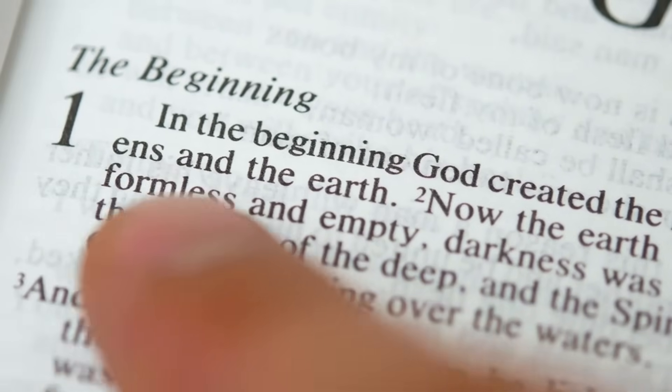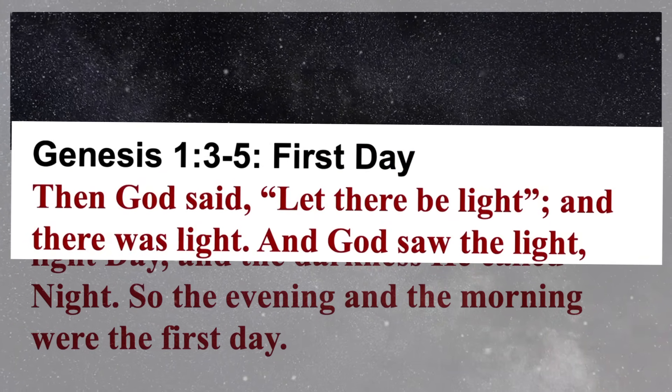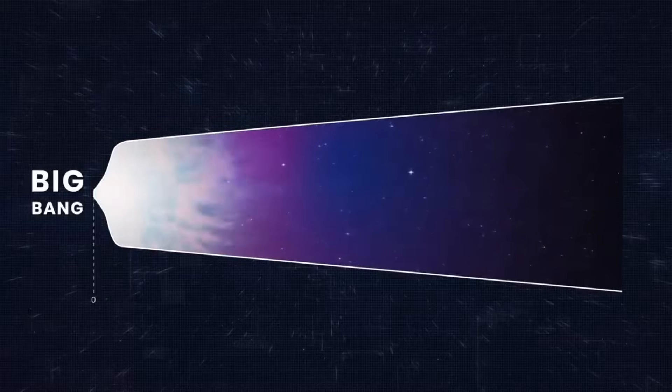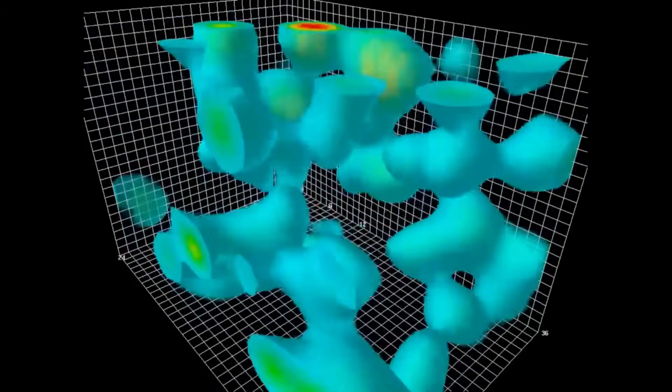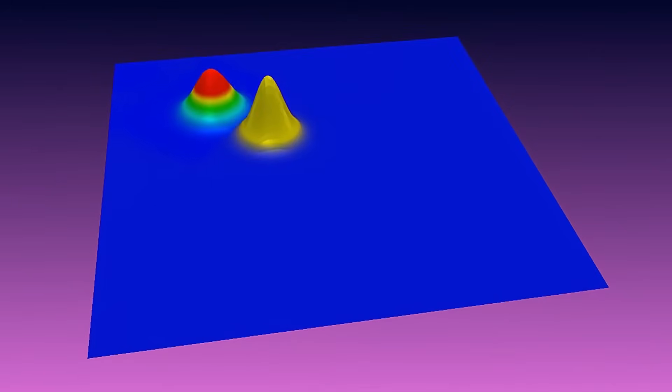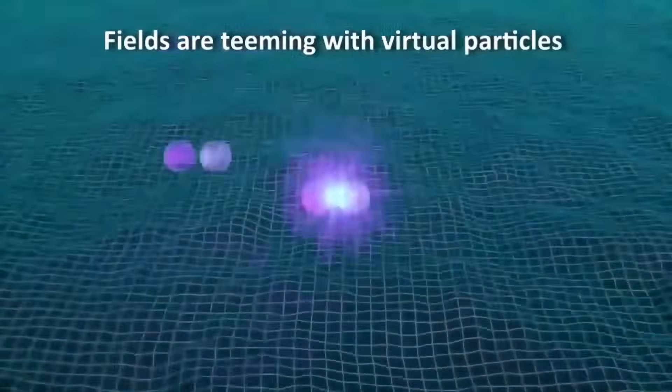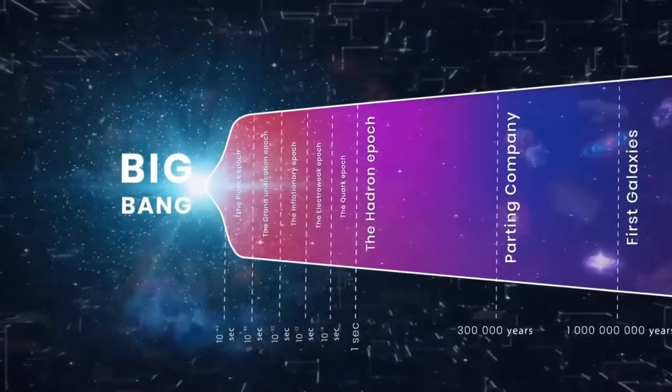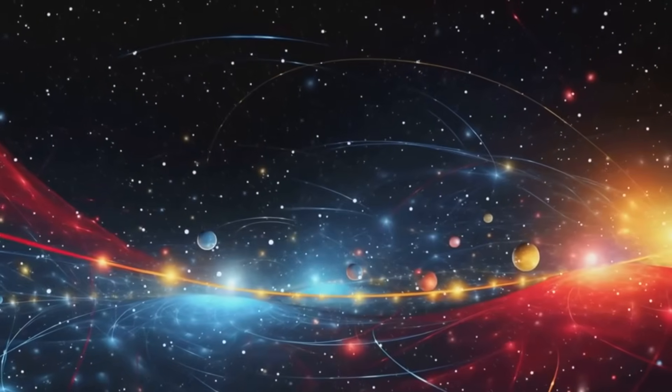Genesis opens with a formless void. And God said, Let there be light. And there was light. On the surface, it's poetic creation. But in quantum cosmology, empty space is far from nothing. It's a quantum vacuum, a seething field of potential energy. Virtual particles flicker into existence and vanish. Some cosmologists propose that a fluctuation in this vacuum triggered the Big Bang, collapsing probabilities into reality. That moment, light bursting forth, mirrors the universe emerging from a quantum fluctuation.